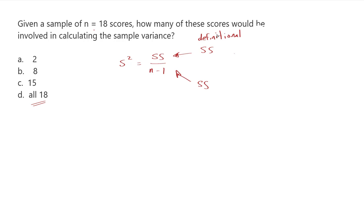I've got what's called the definitional formula, and I've also got the computational. They both give you the exact same result, but they go about getting to it in a different way. The definitional formula is the sum of your squared deviations from the mean.